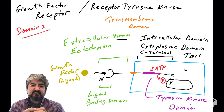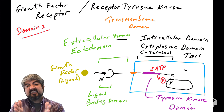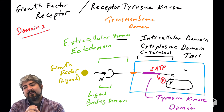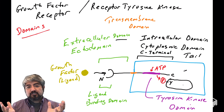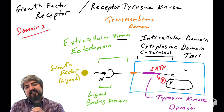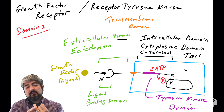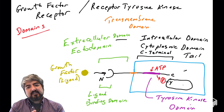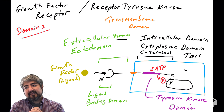The tyrosine kinase domain doesn't phosphorylate any tyrosine — it puts phosphates on very specific tyrosines in very specific proteins. The substrates will be covered in a later video. To summarize: most growth factor receptors — PDGFR, EGFR, FGFR, VEGFR, IGFR — bind growth factors and act as receptor tyrosine kinases. How the kinase domain is regulated and what its substrates are will be discussed in a later video.